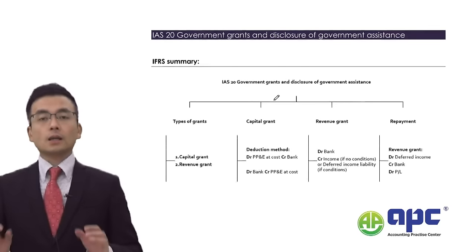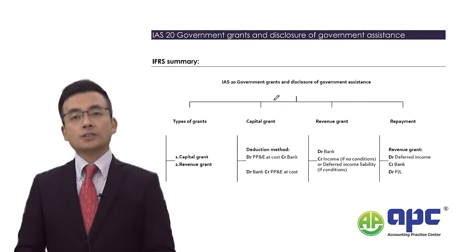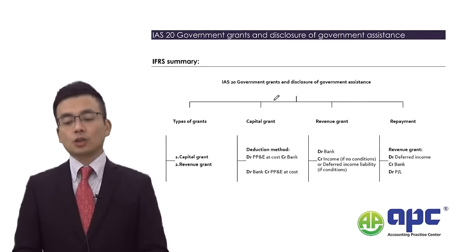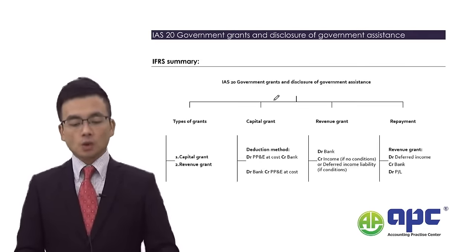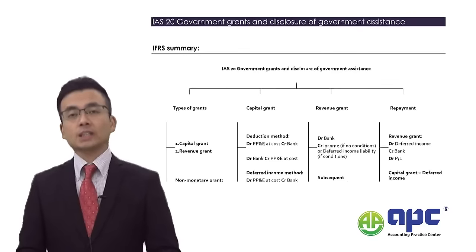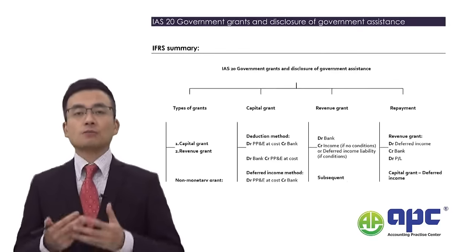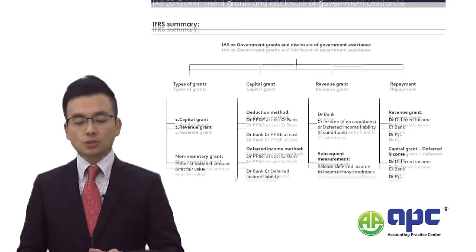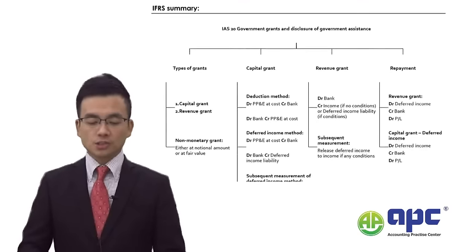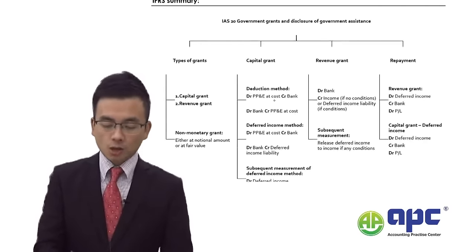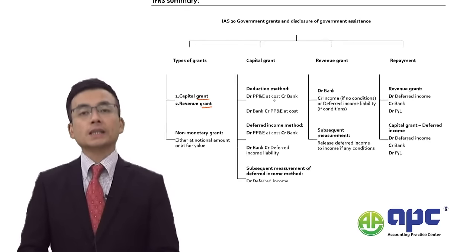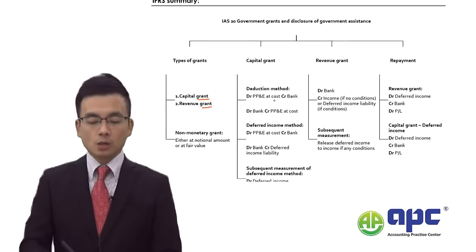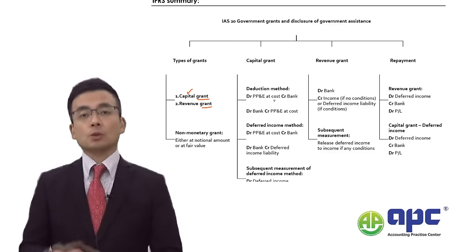The next accounting standard is IAS No. 20, Government Grants and Disclosure of Government Assistance. A government grant is where the government gives you something — usually in the form of cash. There are two types: a capital grant, where the government helps with capital expenditure for acquiring a non-current asset such as PP&E.